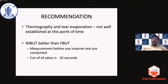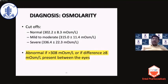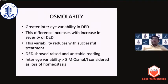The recommendation is that non-invasive breakup time is better than fluorescein breakup time, with a cutoff value of 10 seconds. For tear osmolarity, we have the TearLab osmometer. The normal cutoff value is around 308 milliosmoles per liter. Importantly, the difference between both eyes matters: if the inter-eye difference is more than 8 milliosmoles per liter, it indicates instability of the tear film. You take the higher value between both eyes when applying the 308 cutoff, and inter-eye variability of more than 8 is considered a loss of homeostasis.